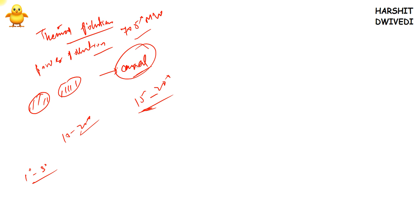Thermal pollution is a big problem: the increased temperature decreases dissolved oxygen levels, which heavily affects the aquatic ecosystem. Organisms die, planktons die, small fish die, then larger aquatic plants die, and the water becomes dormant and stagnant.